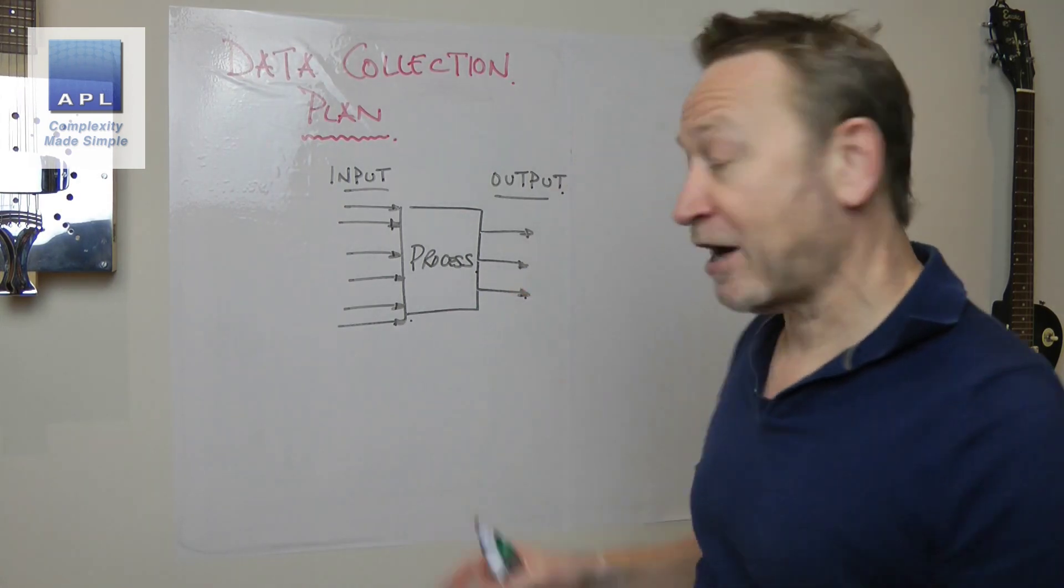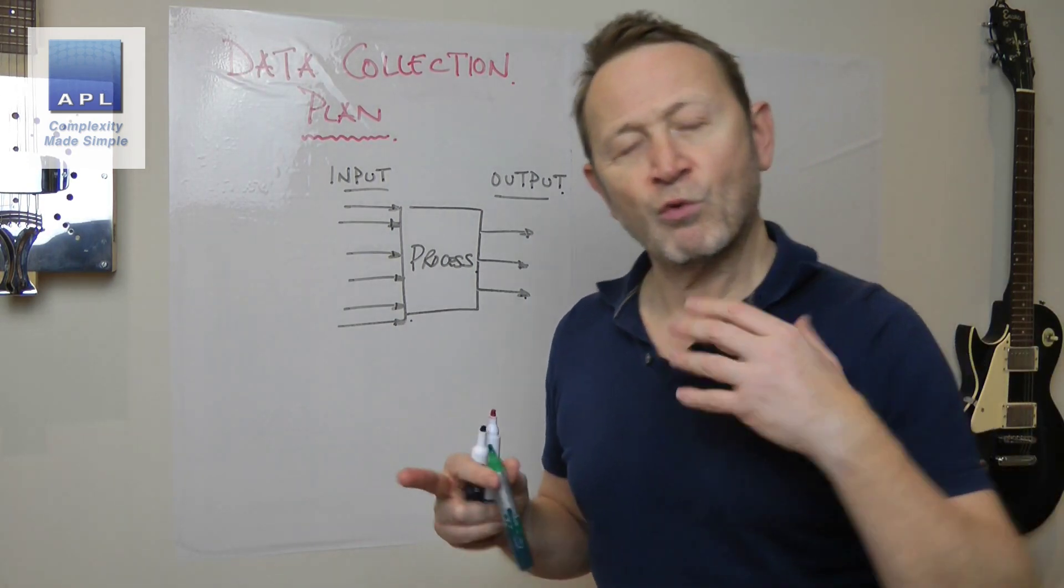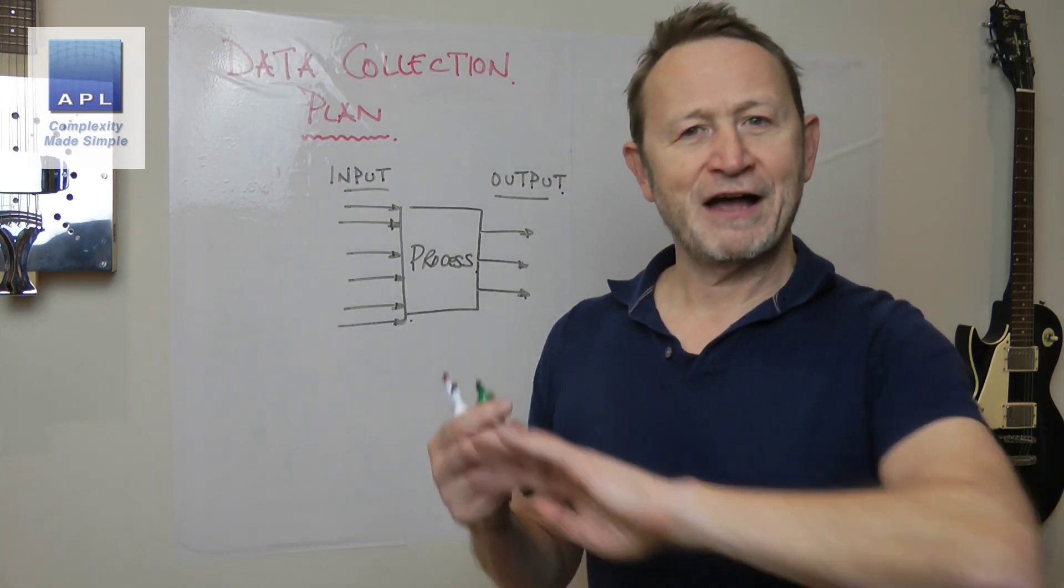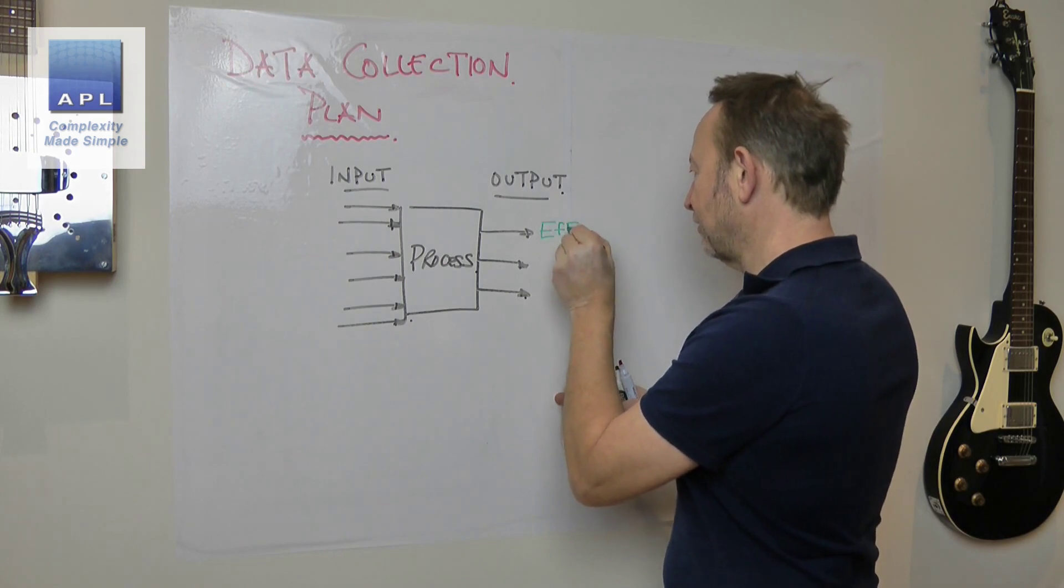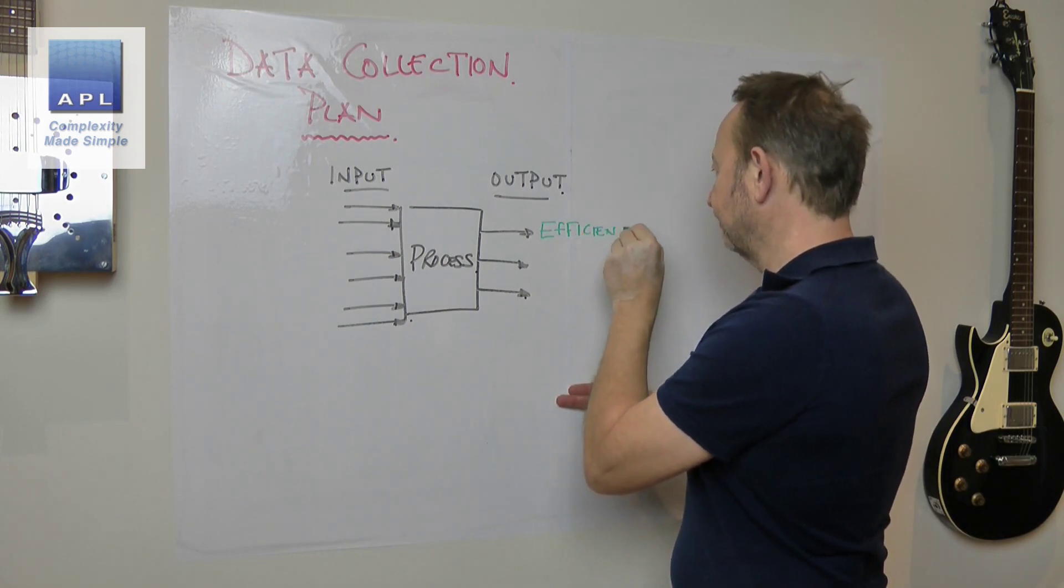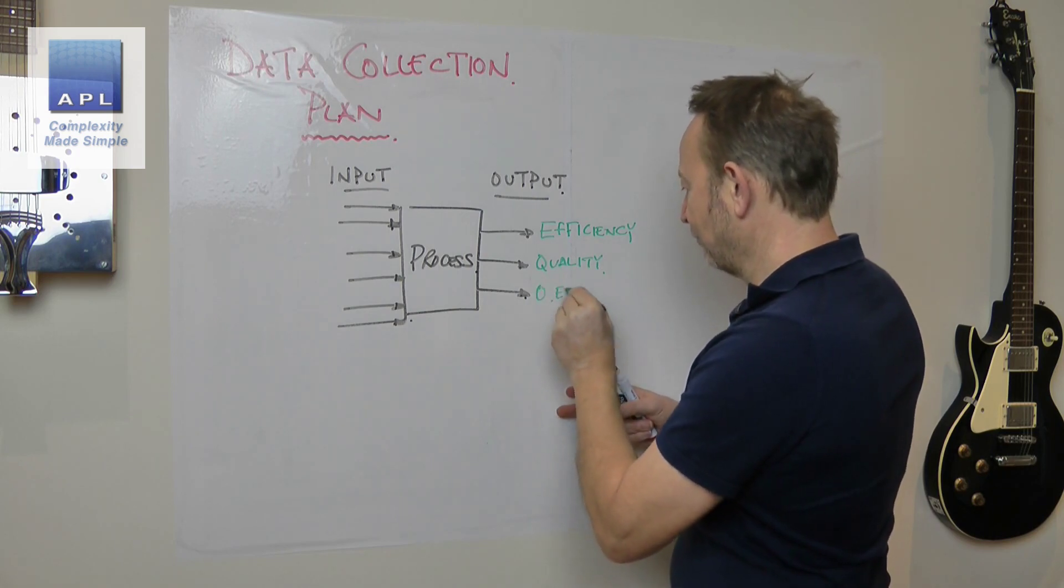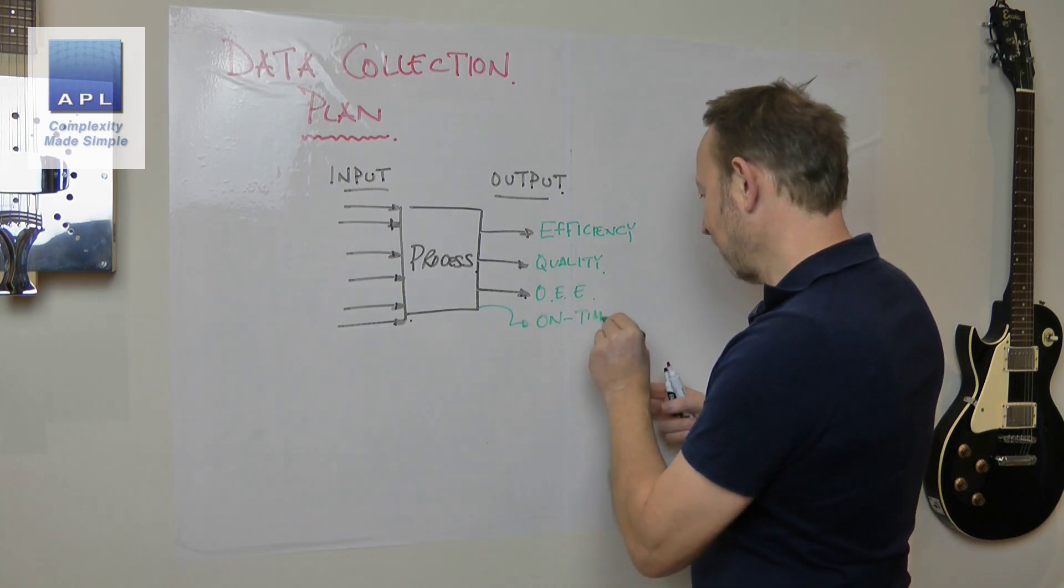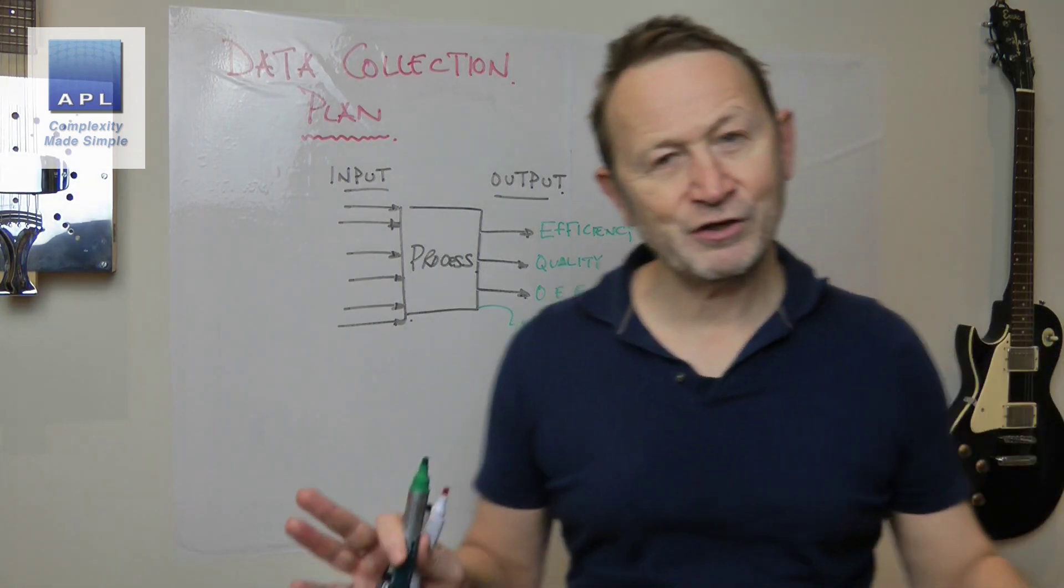Before we start I'm going to talk about the outputs before we start talking about the inputs. One of the things that I get a lot is that people turn up with a Six Sigma project and they want to measure everything and improve every single feature of the process. So they'll say I've got efficiency, I've got quality, they might say I've got OEE, they might talk about on-time delivery.